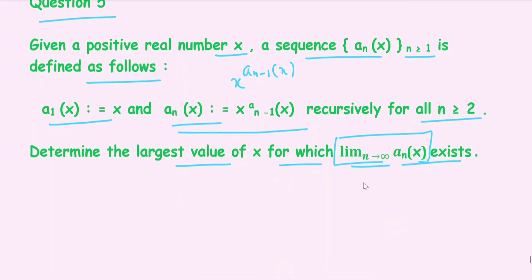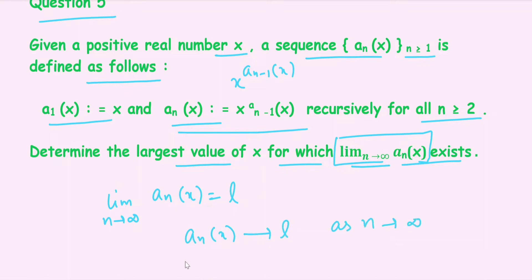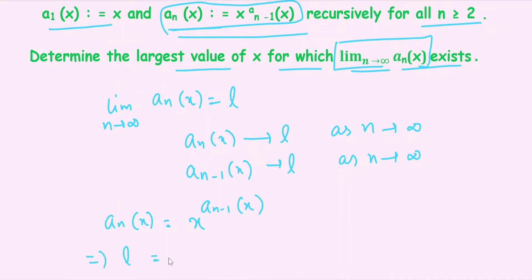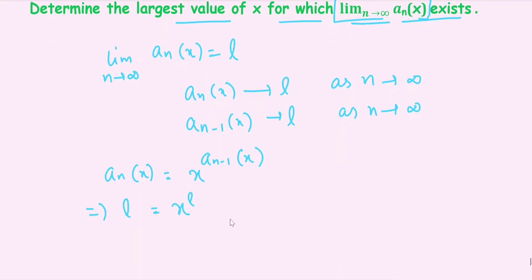Since the given limit exists, suppose the limit as n tends to infinity of a_n(x) equals L. That means a_n(x) tends to L as n tends to infinity. Since {a_n(x)} is a sequence for all n ≥ 1, we can say a_{n-1}(x) also tends to L as n tends to infinity. Substituting into the recursive relation: a_n(x) = x^(a_{n-1}(x)), so in the limit L = x^L.